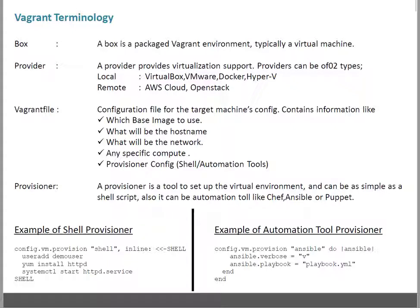The Vagrantfile also holds the provisioner config. Because all these settings are defined in the Vagrantfile, you can create many instances or machines with the same configuration. Vagrant reads the Vagrantfile while creating the virtual machine, so if the same file is used, your configuration will be the same for the target environment.